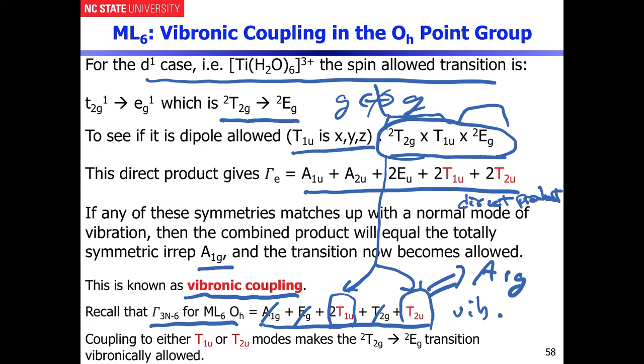That's really what is known as vibronic coupling. You're taking the electronic transition, coupling it to a specific deforming vibration. That deforming vibration lowers the symmetry enough, and that is what gives you the allowedness in this transition. If you take an octahedral compound and couple it to either of those modes, it makes the doublet T2G transition to the doublet EG transition vibronically allowed. And that's how you get over the Laporte selection rule. That's my last little bit I will talk about in terms of group theory as well.